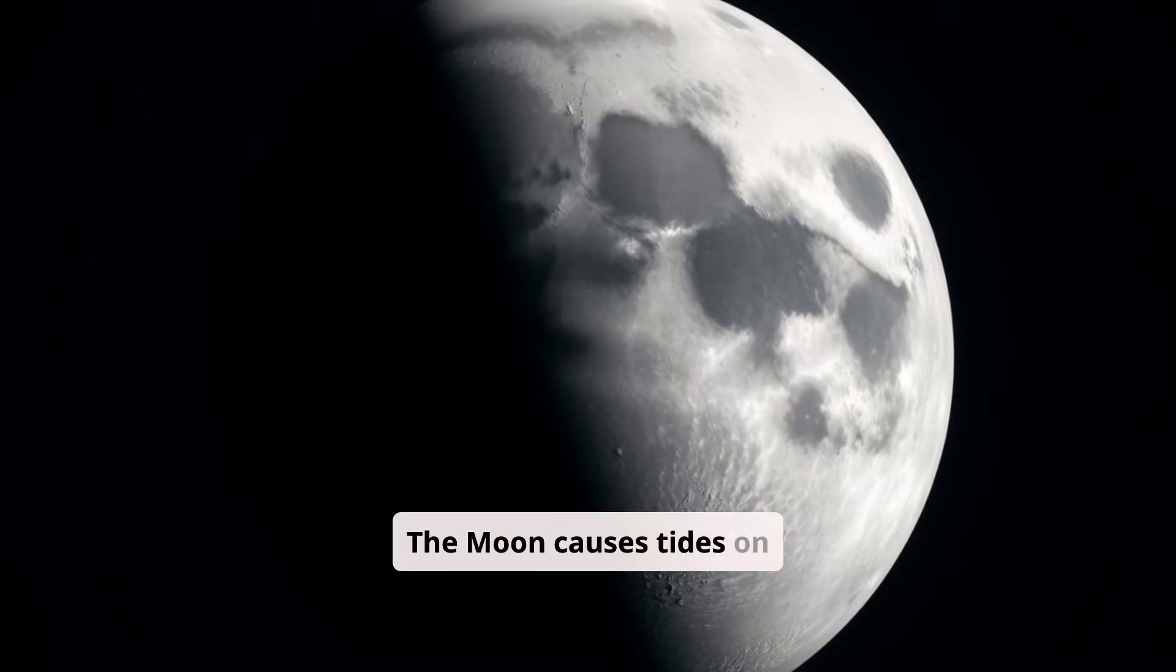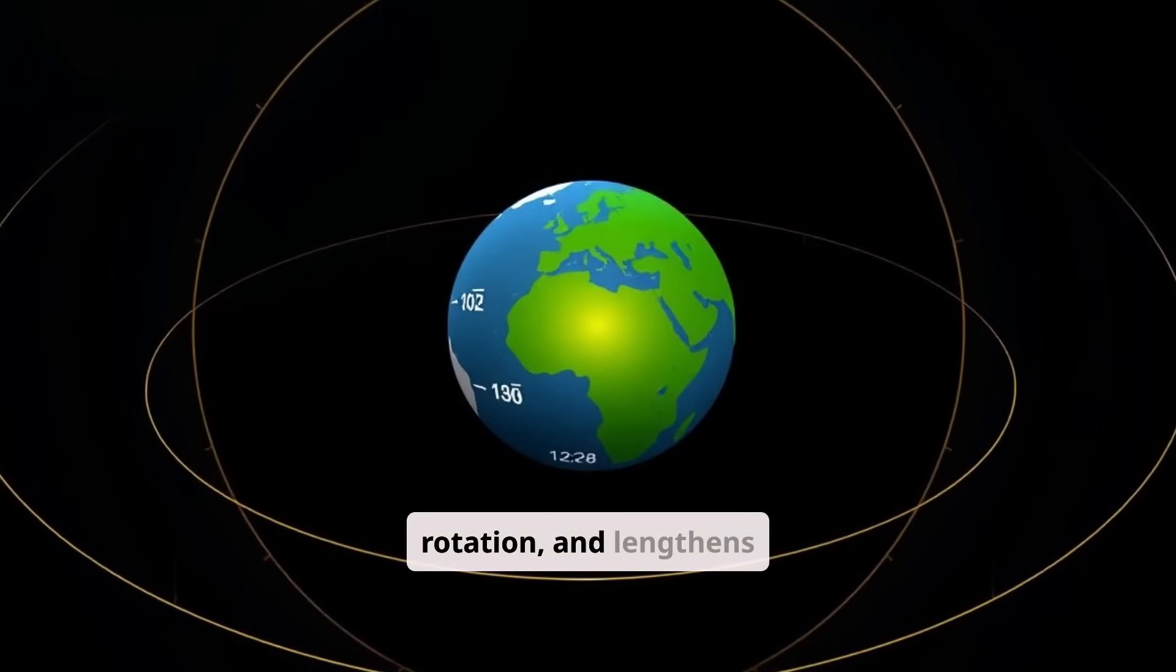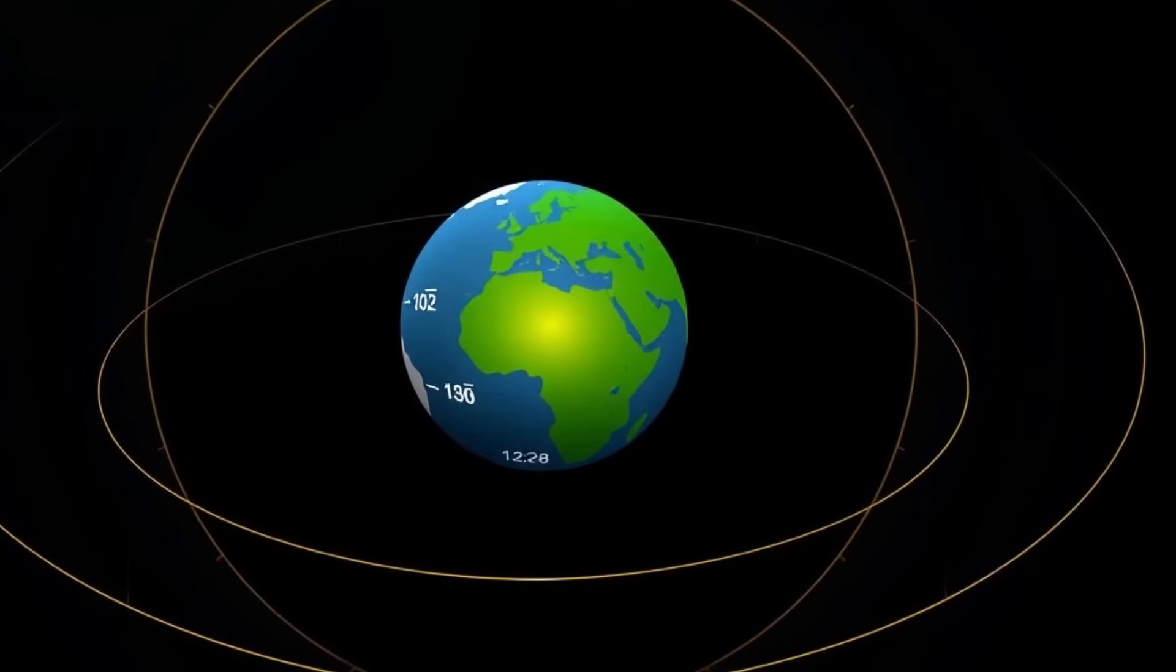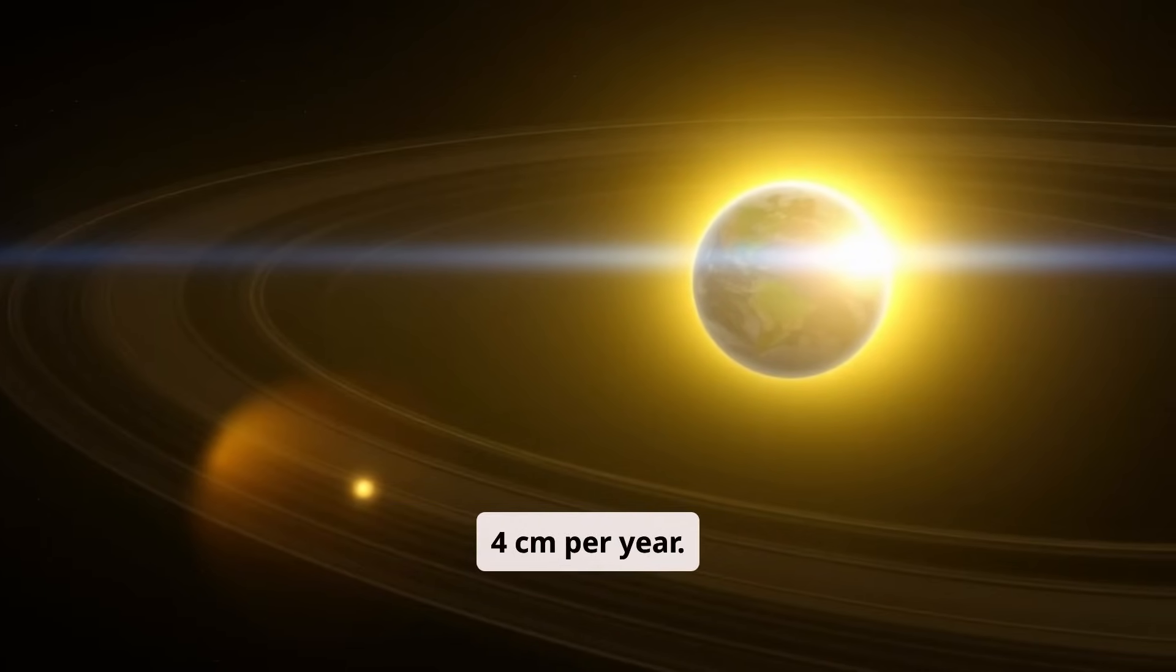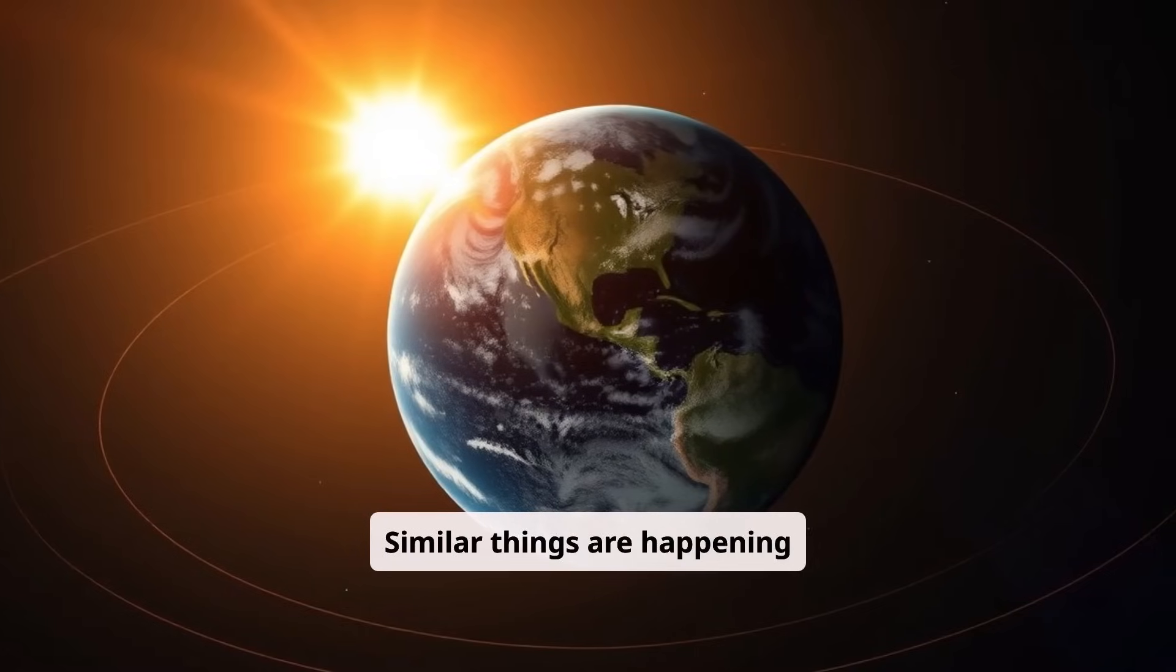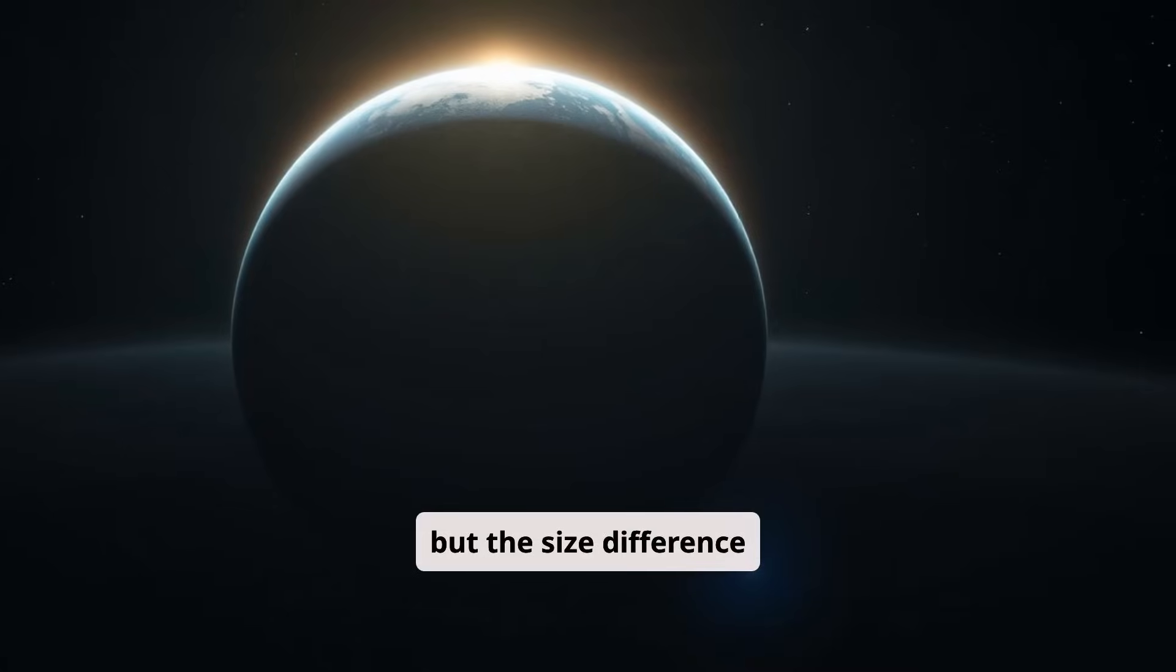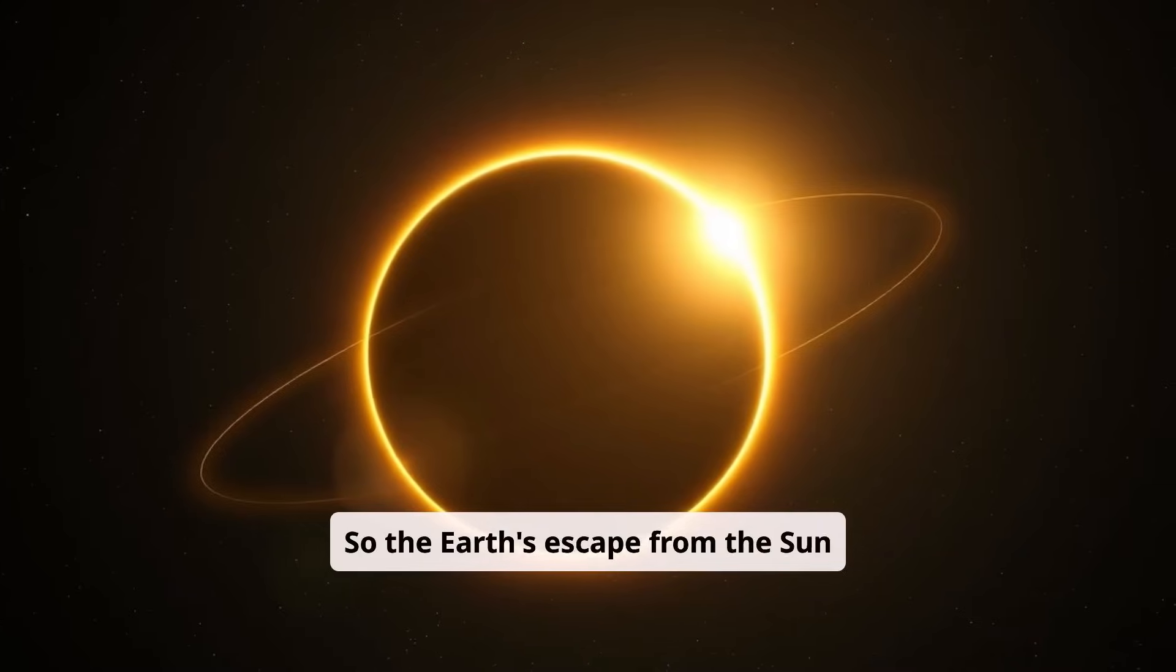The Moon causes tides on Earth, slows down the Earth's rotation, and lengthens the day. As a result, it actually speeds up and moves away from its current orbit, by about 4 centimeters per year. Similar things are happening between the Earth and the Sun. But the size difference between these bodies is quite a lot greater. So the Earth's escape from the Sun is negligible.